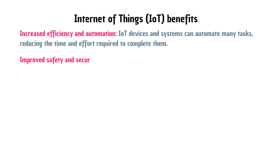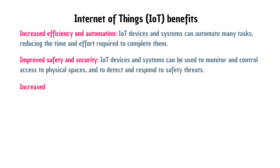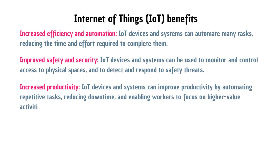Improved safety and security: IoT devices and systems can be used to monitor and control access to physical spaces and to detect and respond to safety threats. Increased productivity: IoT devices and systems can improve productivity by automating repetitive tasks, reducing downtime, and enabling workers to focus on higher-value activities.